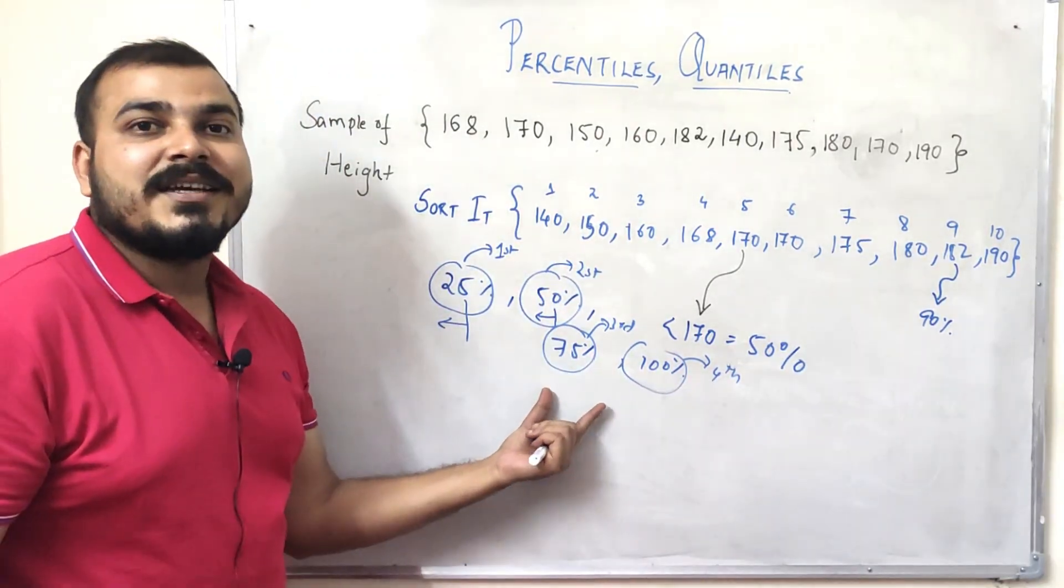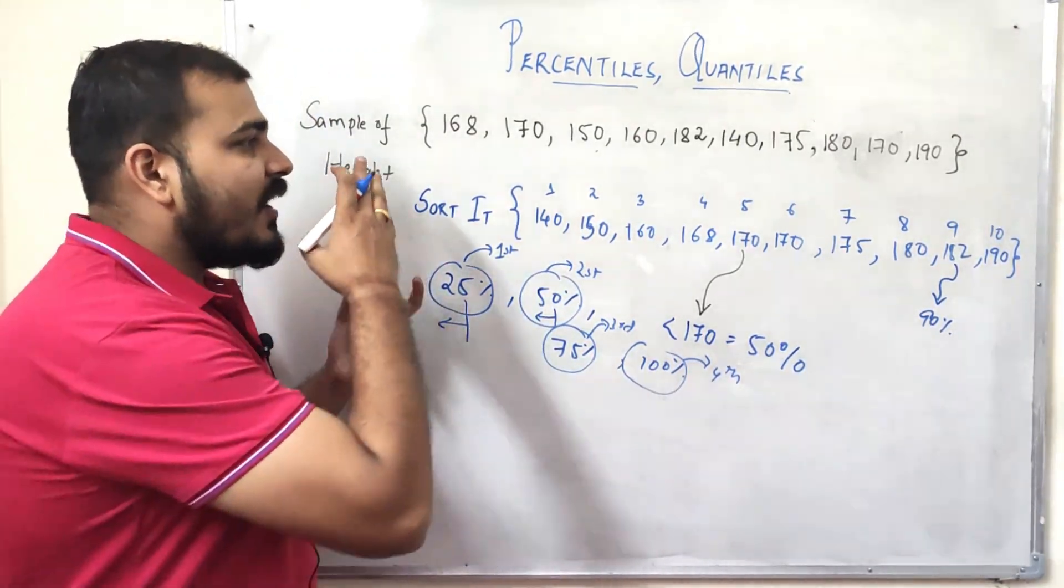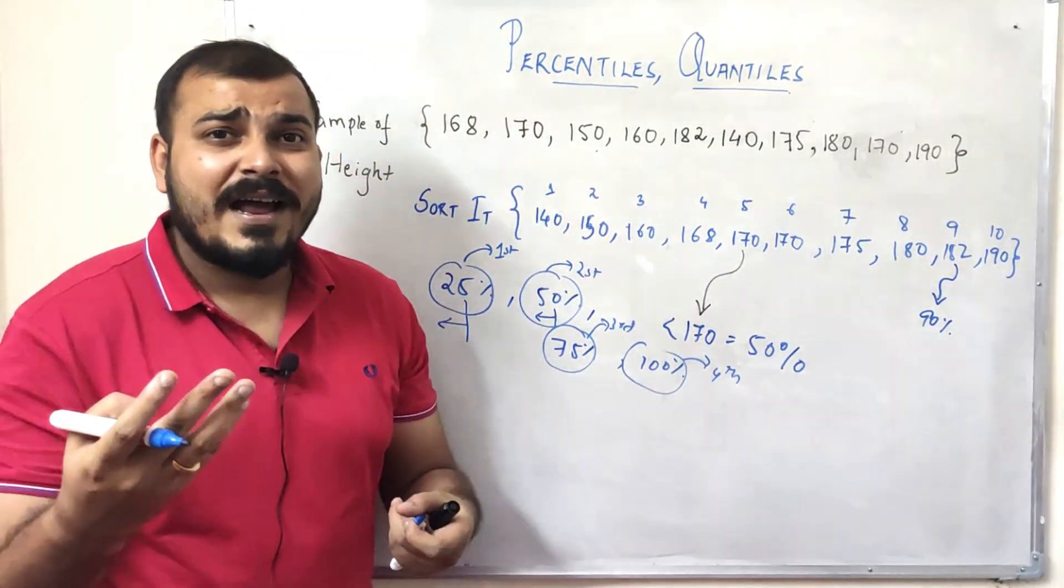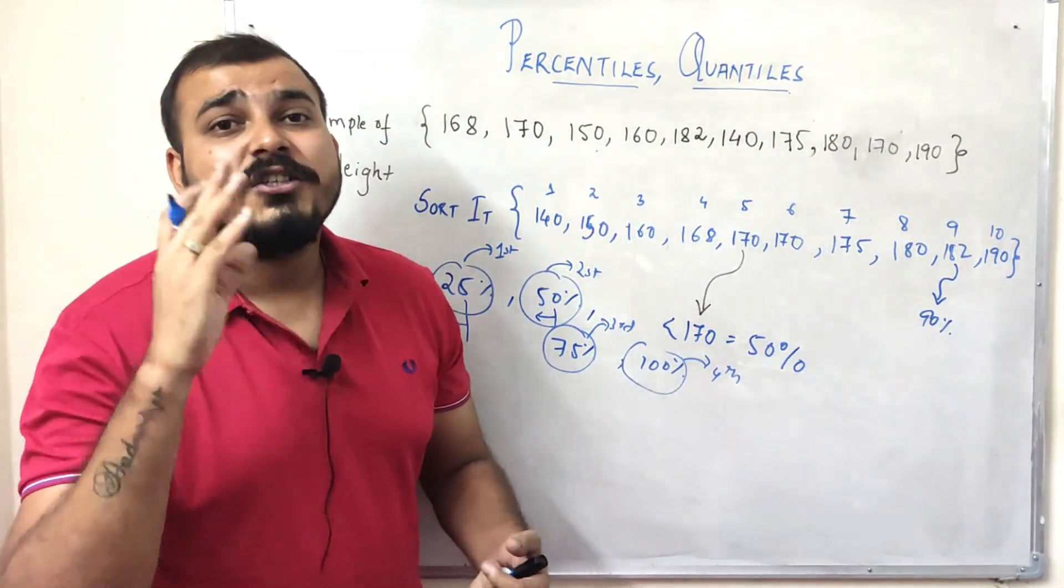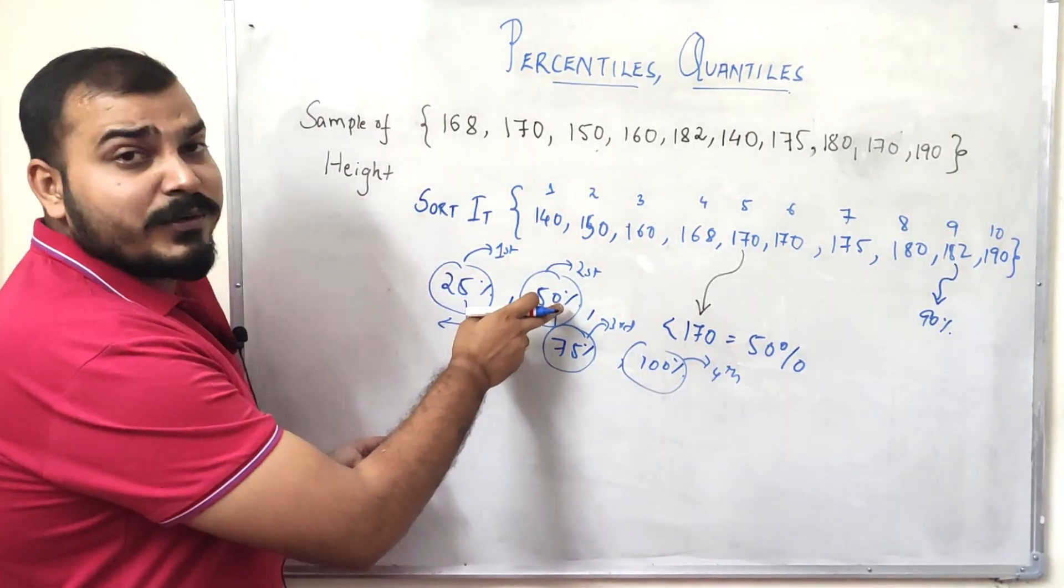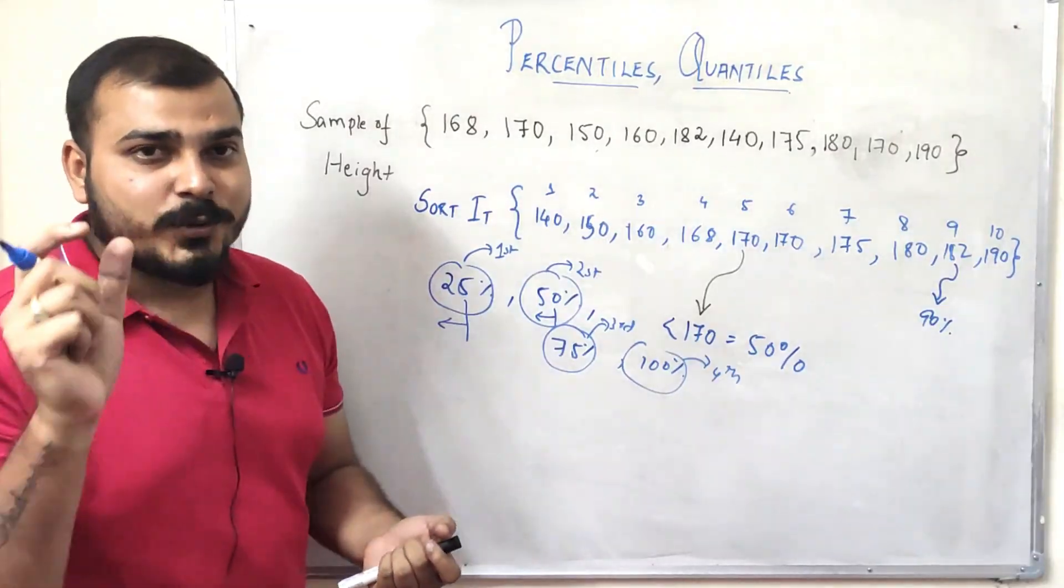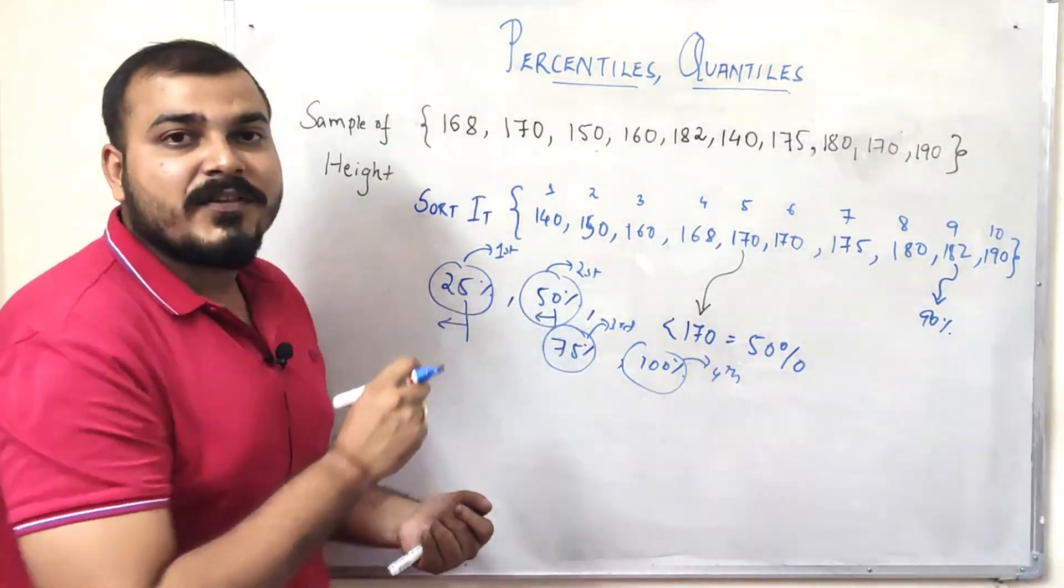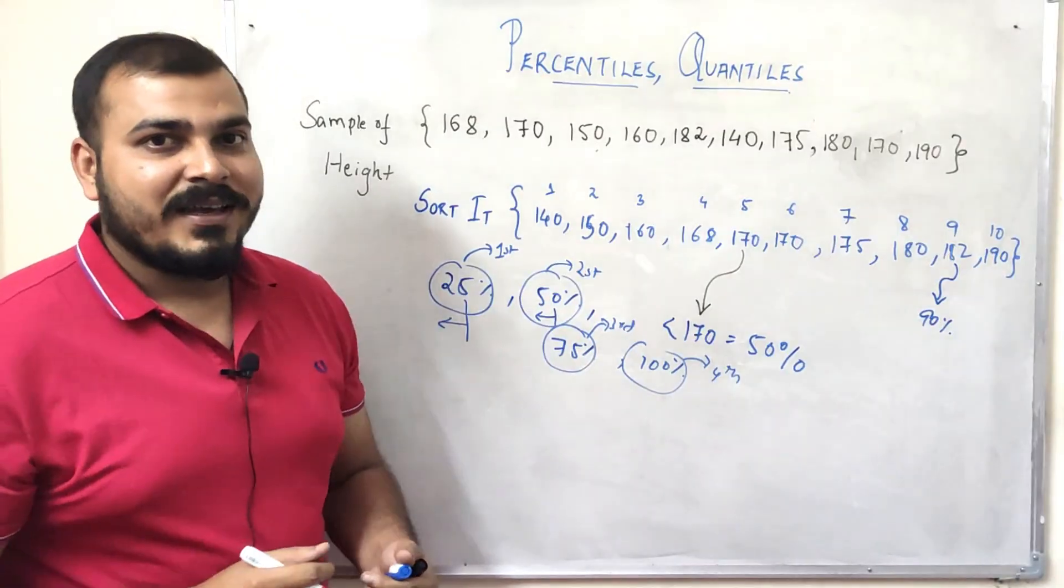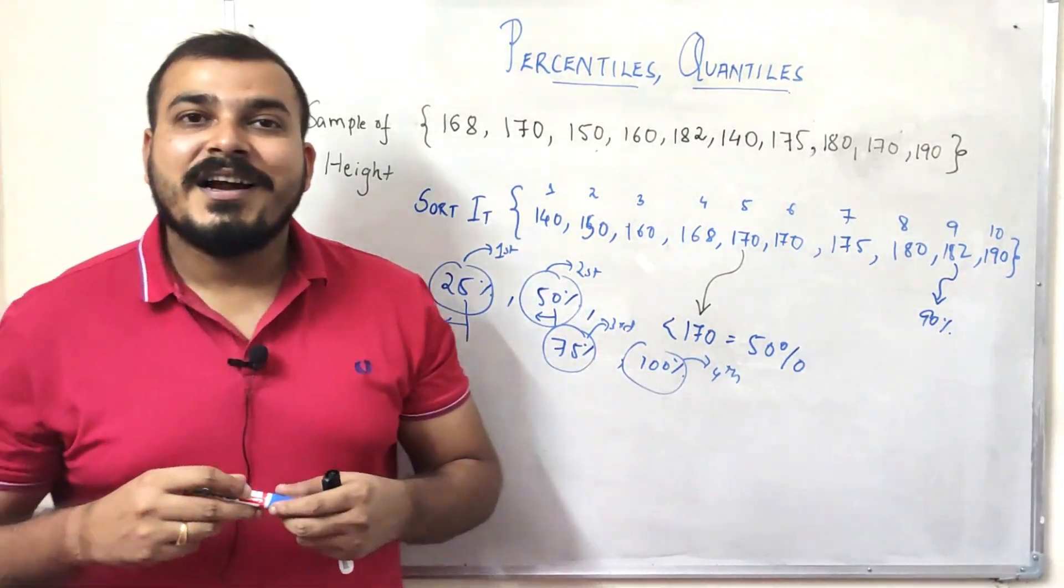If you have 0 to 100 percentile, those are basically divided by four values because quantile specifies 25 percentile. So the difference between all these particular values - you can see the difference between 50 percentile and 25 percentile is 25, again 75 percentile and 50 percentile is 25, 100 percentile and 75 percentile is again 25.